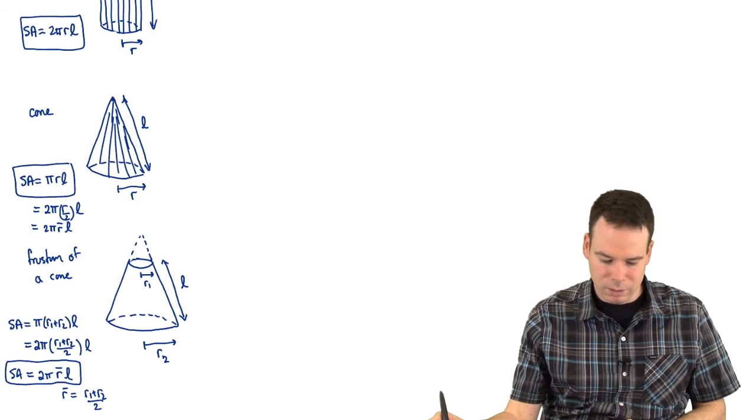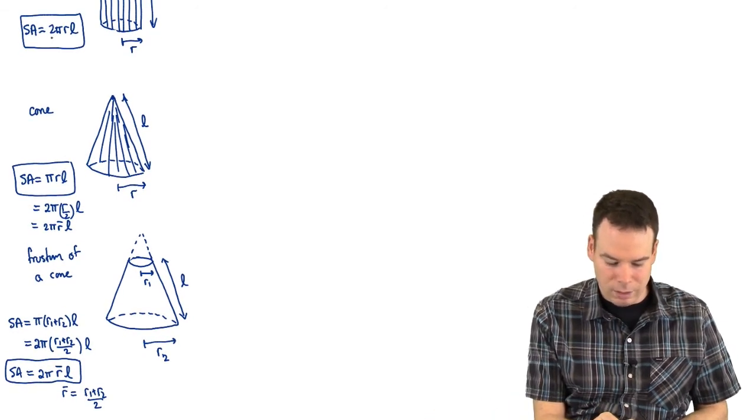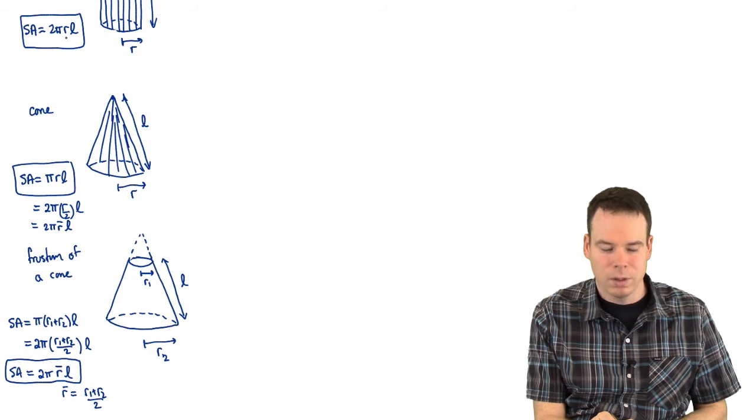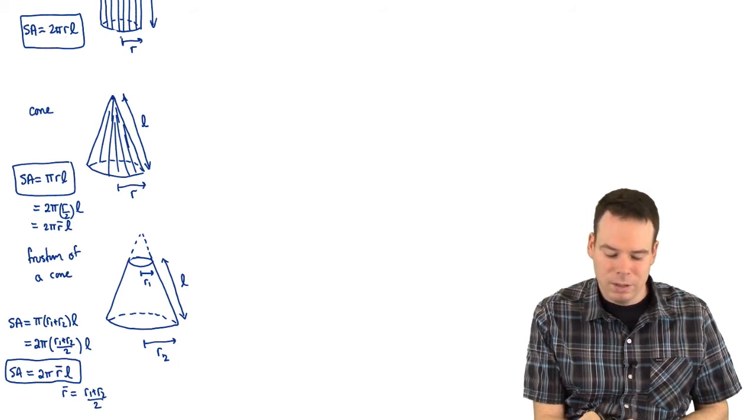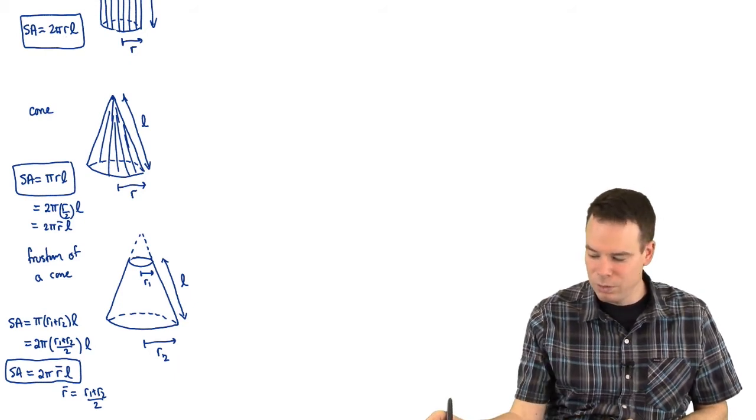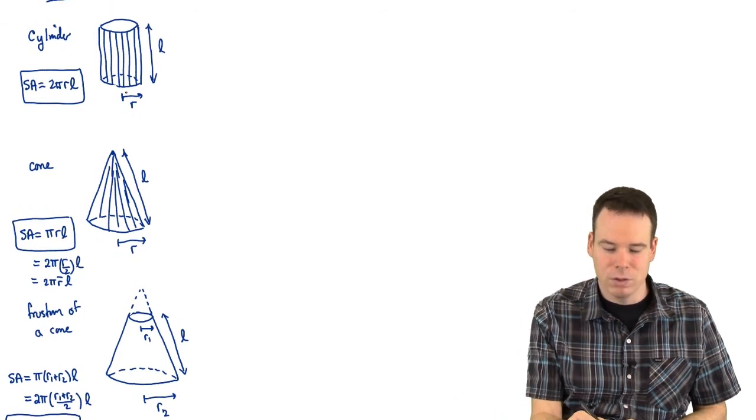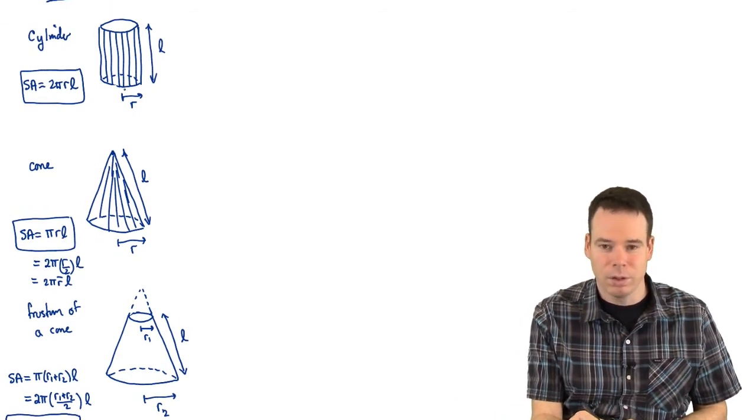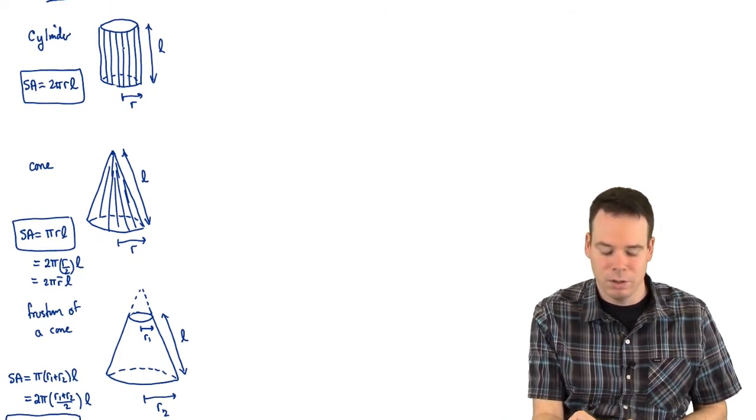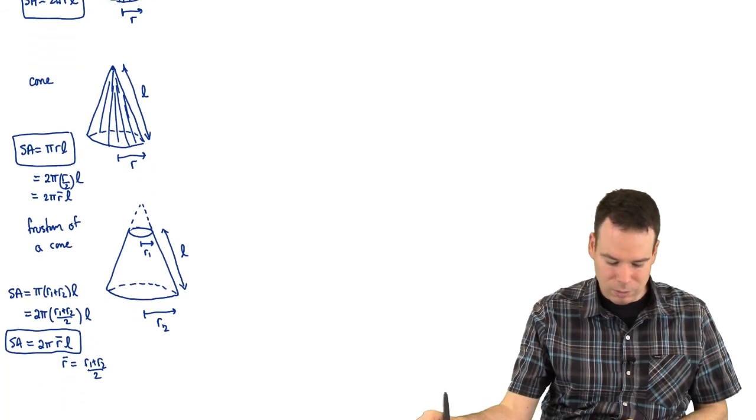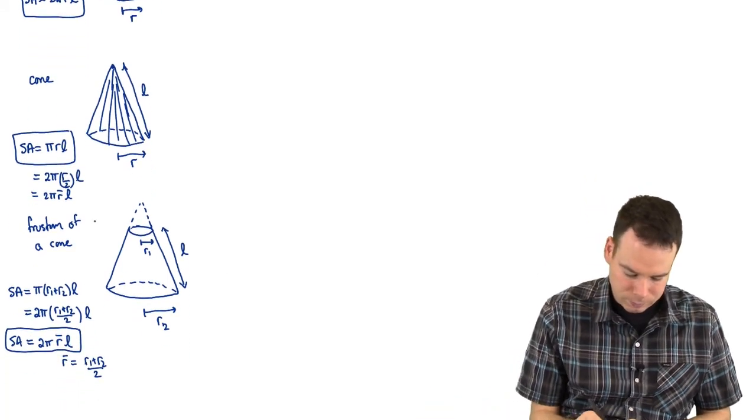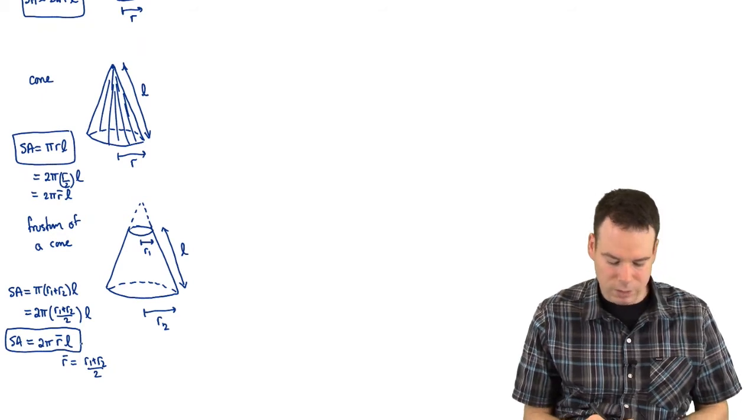What about the cylinder? Well the cylinder has surface area 2π times what is R? R is the radius of the base circle but I could also think of it as the average of the radius of the upper circle and the lower circle. The average of R and R is just R.